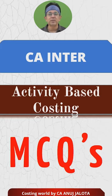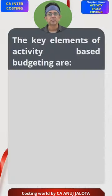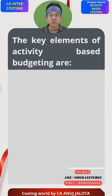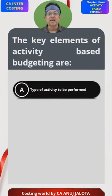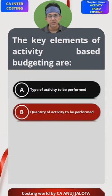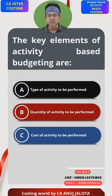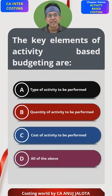Activity-Based Costing MCQs. The key elements of activity-based budgeting are: A. type of activity to be performed, B. quantity of activity to be performed, C. cost of activity to be performed, and D. all of the above.